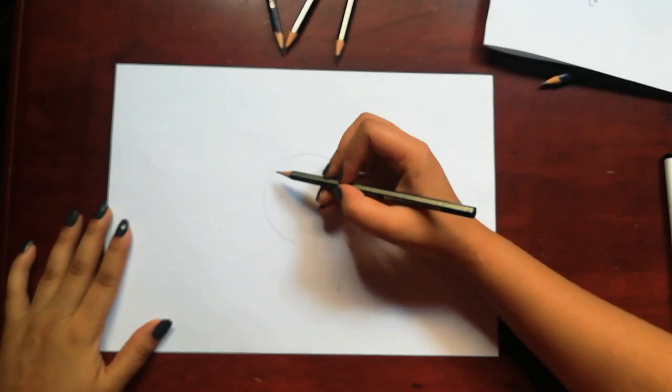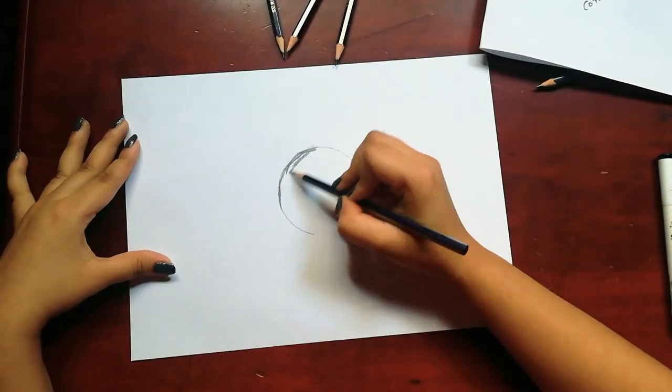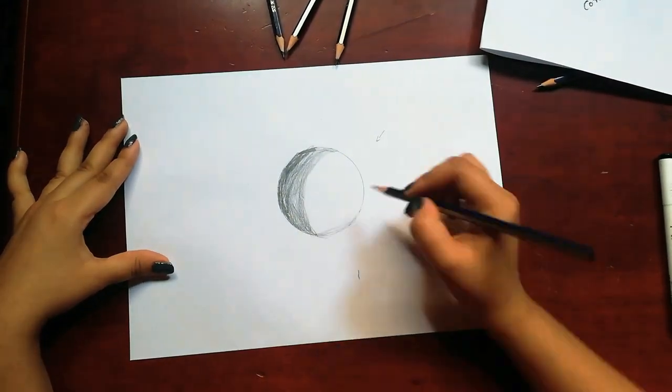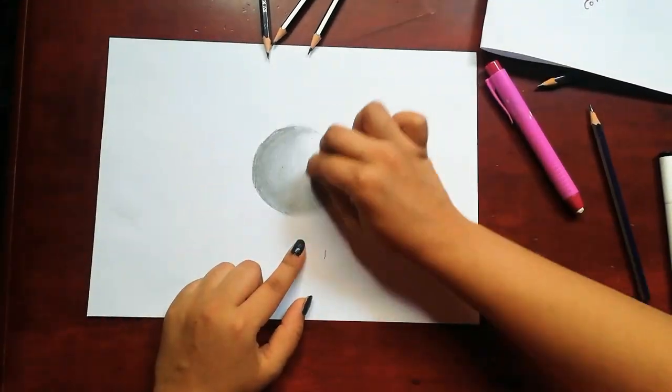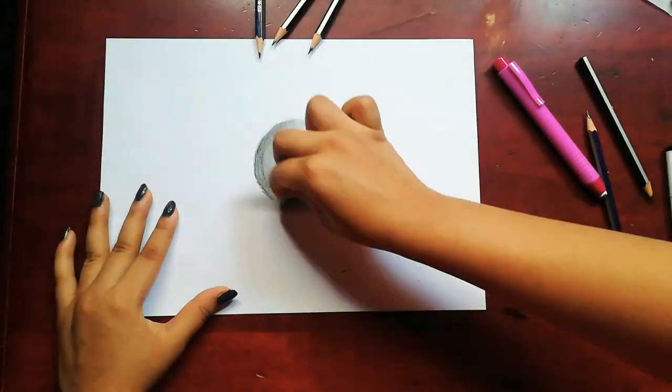Here also the light is going to come from the right hand side. I'm going to use tissue paper for blending, a little bit darker and then the lighter part.